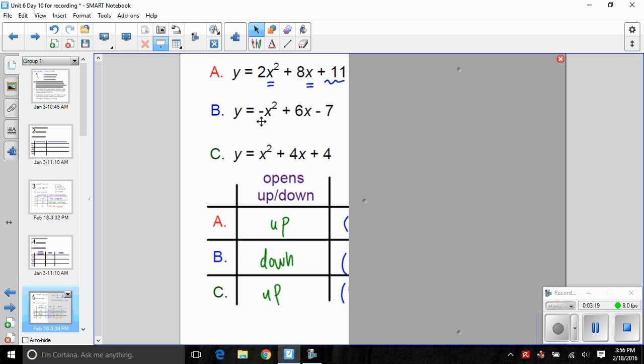In the first equation, we see that our value of a is positive. We know that's a right side up parabola. Versus equation B, we've got a negative leading coefficient on the quadratic term, that means we've got an upside down parabola. And C again is positive leading coefficient, so C opens up.